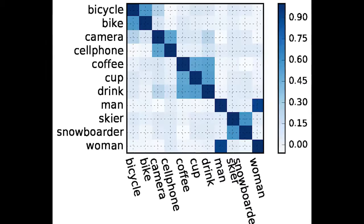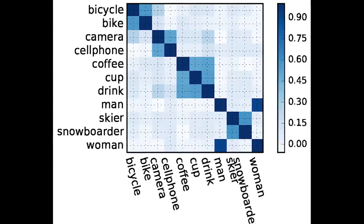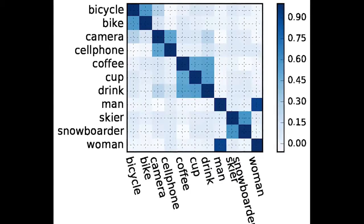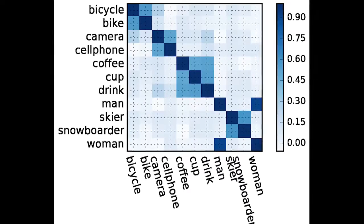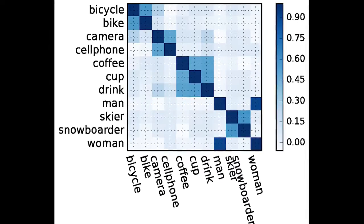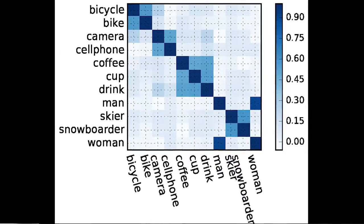Beyond that, we demonstrate that the trained parameters of our model can be used as word embeddings which capture spatial image relationships and provide interpretability.